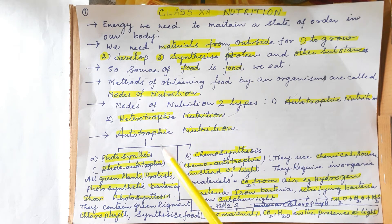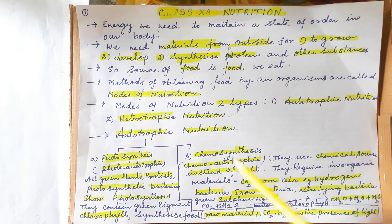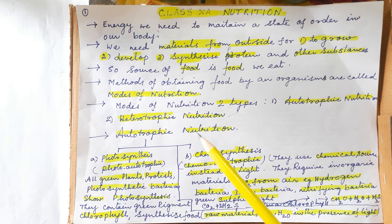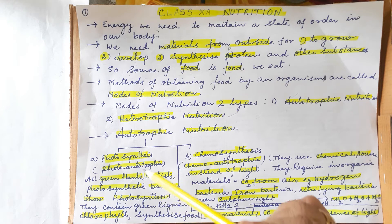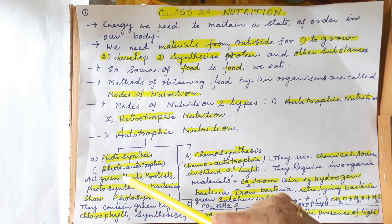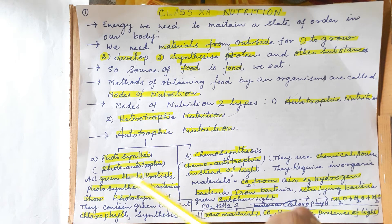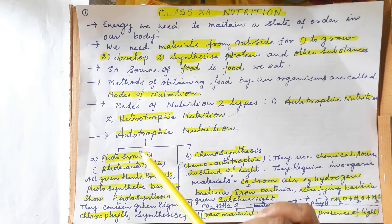The two kinds of autotrophic nutrition are: first, photosynthesis done by green plants, and second, chemosynthesis. What is the definition of photosynthesis, and who performs it? 'Photo' means light. Organisms doing photosynthesis are called photo autotrophs — meaning they synthesize food with the help of light. This process is called photosynthesis.